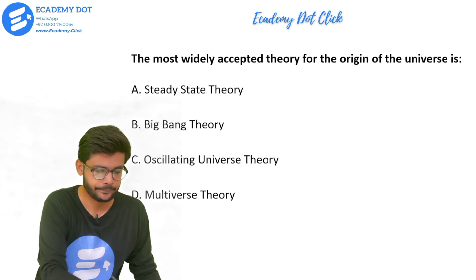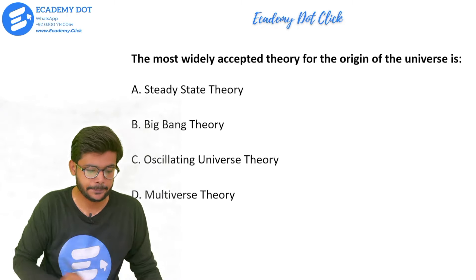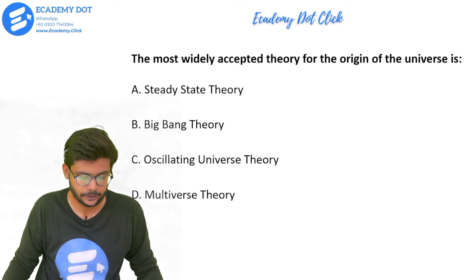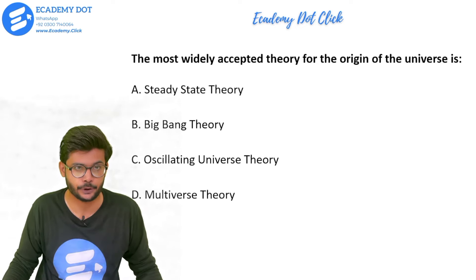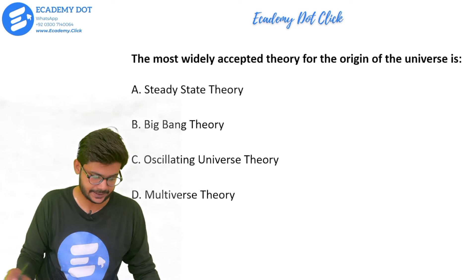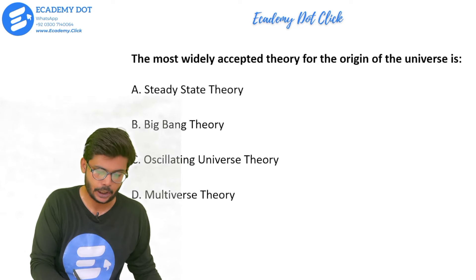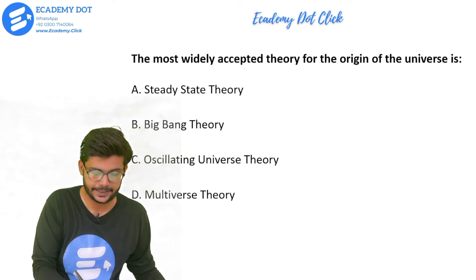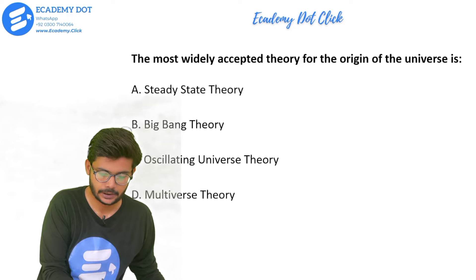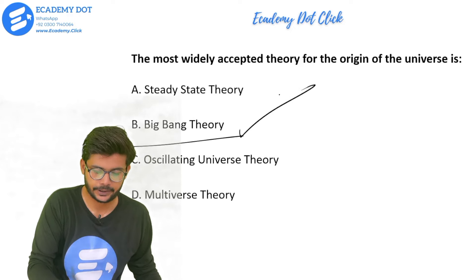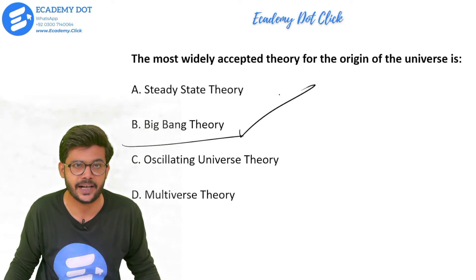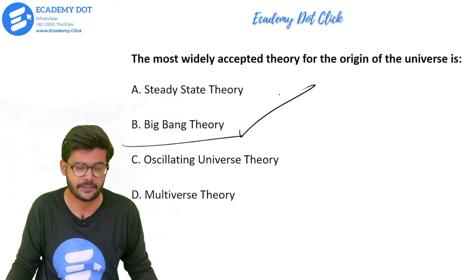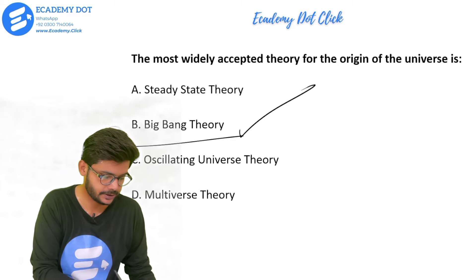Options for the origin of the universe are: steady state theory, big bang theory, oscillating universe theory, or multiverse theory. The answer is option B, that is the big bang theory. Big bang theory is the widely accepted theory for the origin of the universe.